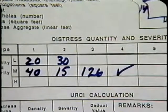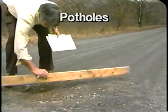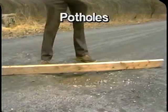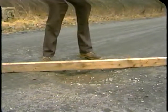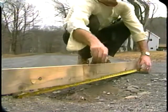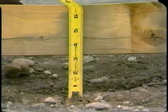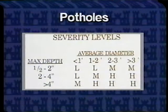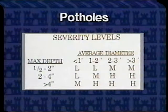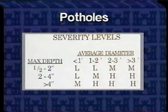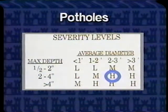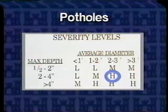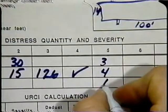Potholes are a familiar sight. First measure their diameter and depth. This one is three feet in diameter by three inches deep. Next refer to the table in the field manual to determine severity — here we get one at high severity. Record the total number of potholes for each severity level.